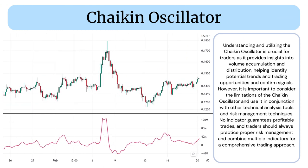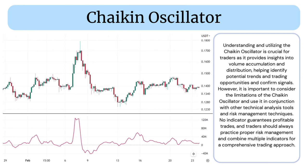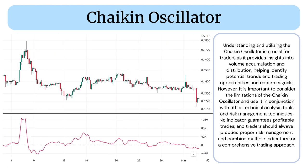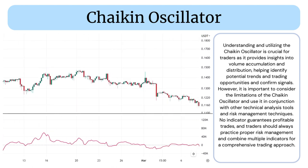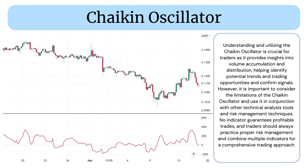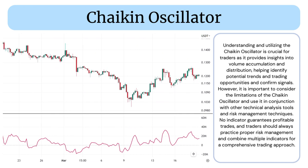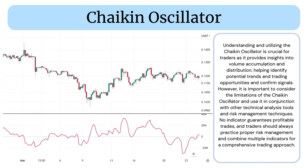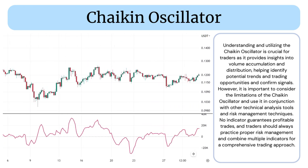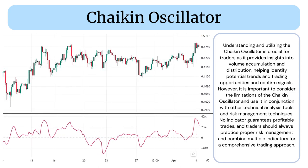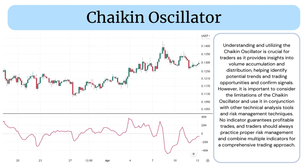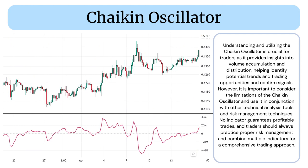Understanding and utilizing the Chaikin Oscillator is crucial for traders as it provides insights into volume accumulation and distribution, helping identify potential trends, trading opportunities, and confirm signals. However, it is important to consider the limitations of the Chaikin Oscillator and use it in conjunction with other technical analysis tools and risk management techniques. No indicator guarantees profitable trades, and traders should always practice proper risk management and combine multiple indicators for a comprehensive trading approach.